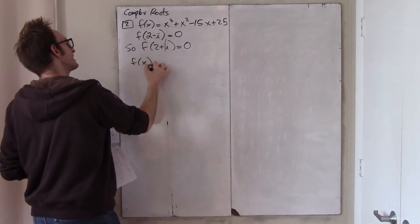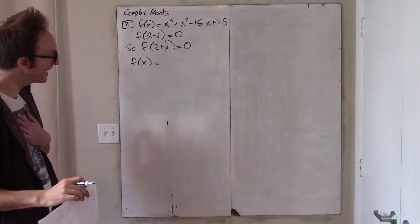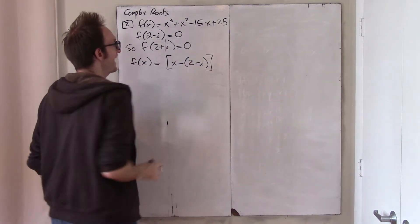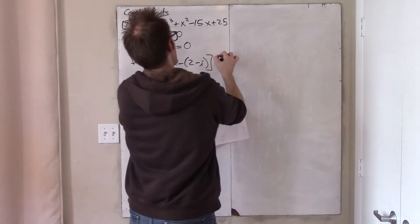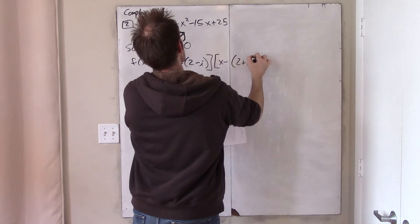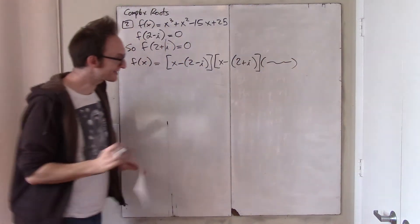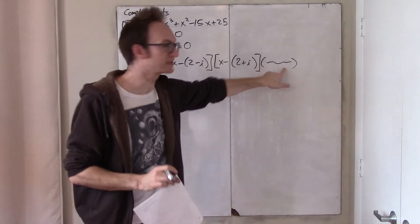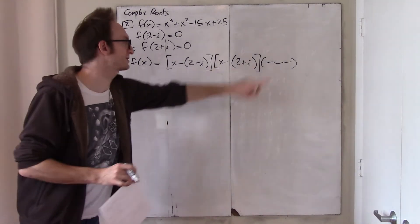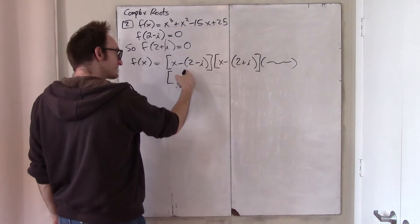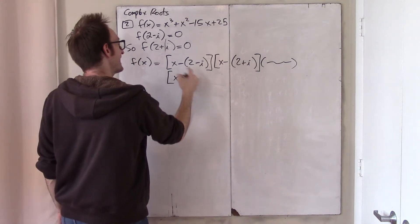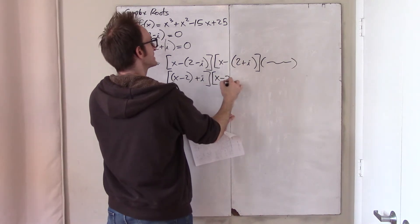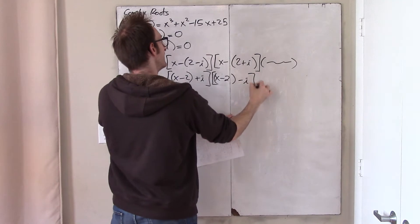And so now, I shall use the factor theorem. The factor theorem says that if 2 minus i is a root, then x minus (2 minus i) is a factor. And the factor theorem says that if 2 plus i is a root, then x minus (2 plus i) is a factor. So each of these are factors of that. Now we repeat the same sort of trick from class, where we simplify things by distributing that negative. So, we get x minus 2 plus i. And then here, when we distribute the negative, we get x minus 2 minus i.